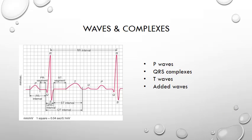Waves and complexes. P waves: are they present and of the correct morphology? And do they precede each QRS? The best leads to view P waves in are leads 2 and V1. In V1, P waves can often be biphasic. The QRS complexes: are they present and of the correct morphology? Is there a QRS after every P wave? And is there good R wave progression through the precordial leads?